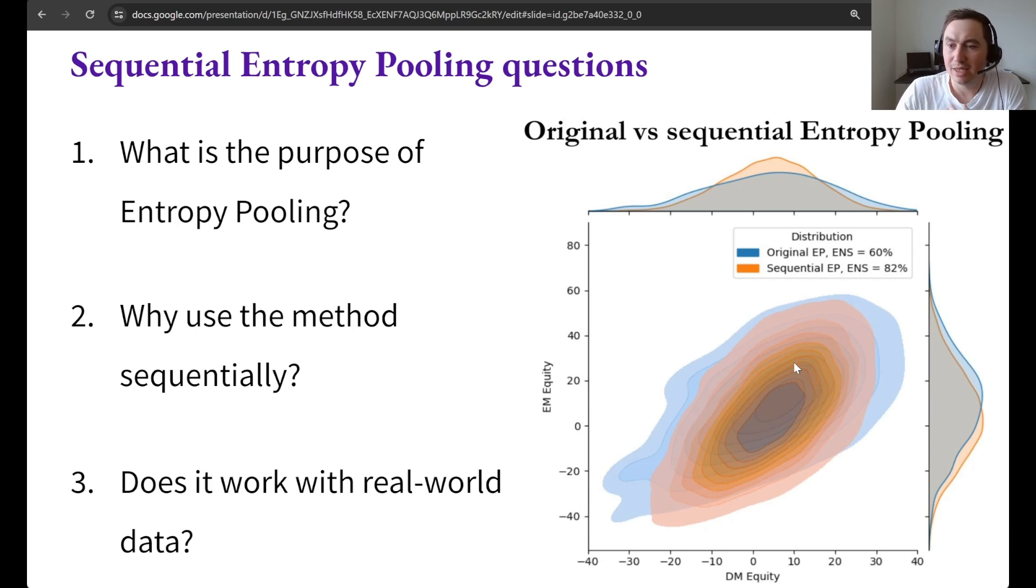But here you can see that we have implemented basically the same views on developed and emerging market equities using the original heuristic which just fixes parameters to the prior value when necessary and then using sequential entropy pooling that we recommend. And you can see here that we get a higher effective number of scenarios in this case which is significantly higher which means that we have a lower relative entropy also.